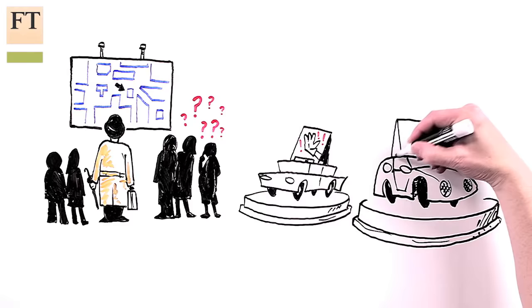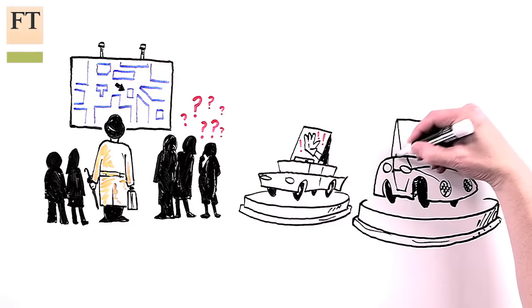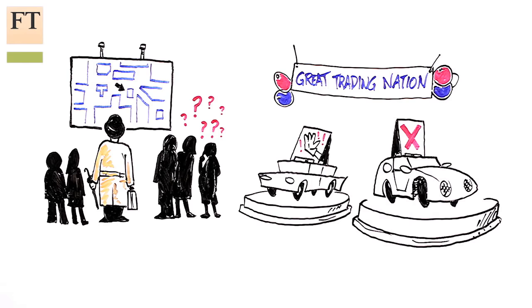They all have different designs so that we can find the one that suits your priorities best, whether that's to limit European immigration, be rid of European laws, or remain a great trading nation. Choice number one is to go it alone.